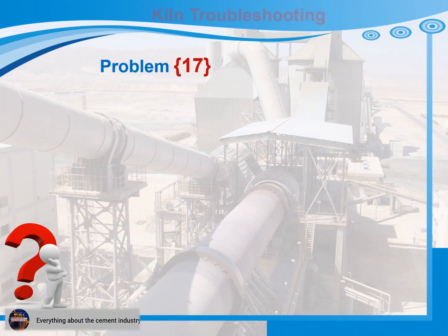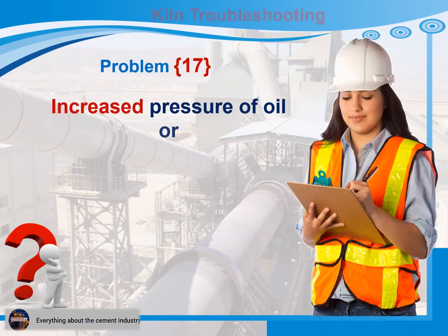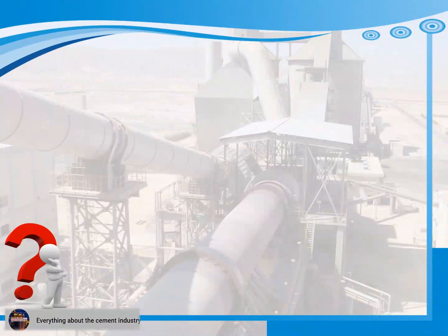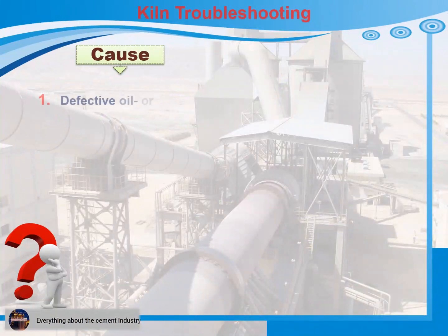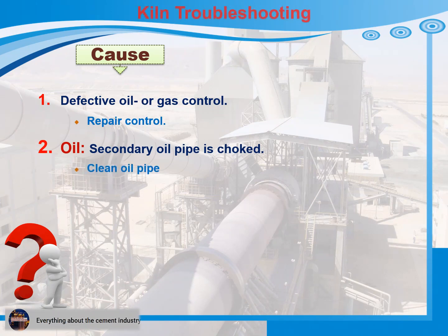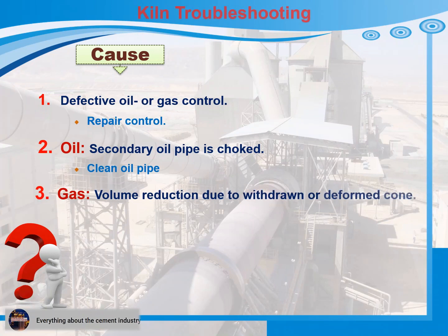Problem 17: Increased pressure of oil or gas of the firing system. Cause 1: Defective oil or gas control. Recommendations for action: Repair control. Cause 2: If oil is used, secondary oil pipe is choked. Recommendations for action: Clean oil pipe. Cause 3: If gas is used, volume reduction due to withdrawn or deformed cone. Recommendations for action: Repair or adjust the cone.